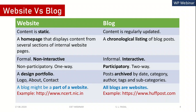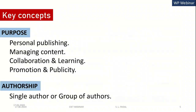On a blog you can comment on any post or page and interact with the creator — communication is two-way. A website has static content with no interaction, so communication is one-way. A blog also has some static design elements like logo, about, and contact pages, while blog posts are archived by date, category, author, tags, and subcategories. A blog might be part of a website, but all blogs are websites. An example website is www.ncert.nic.in, and an example blog is www.huffpost.com.